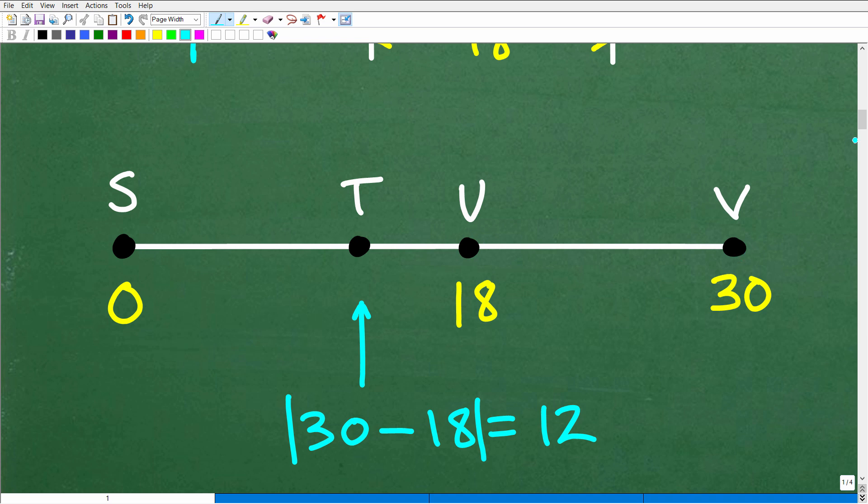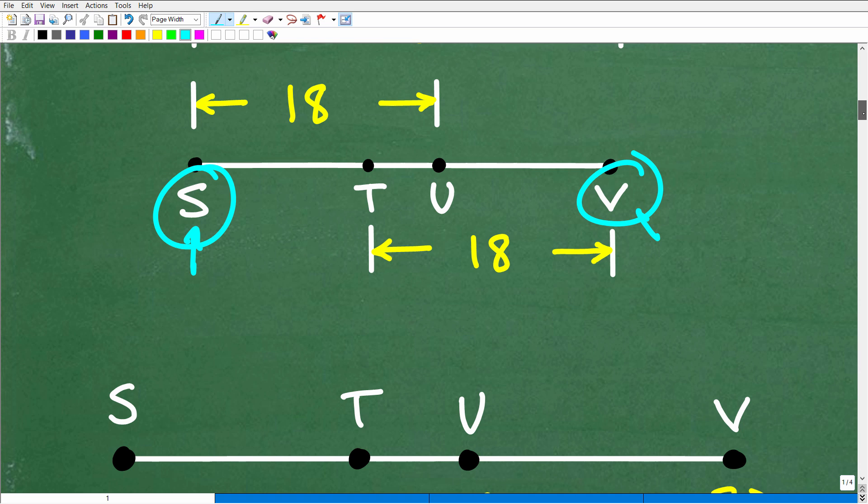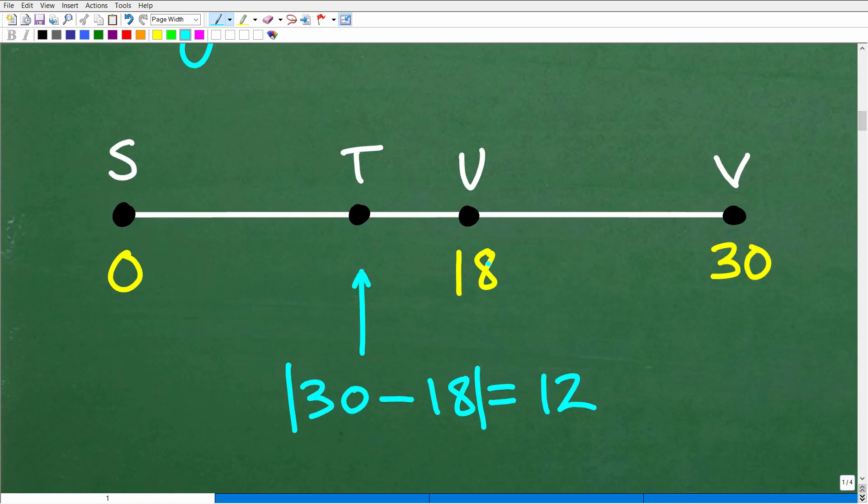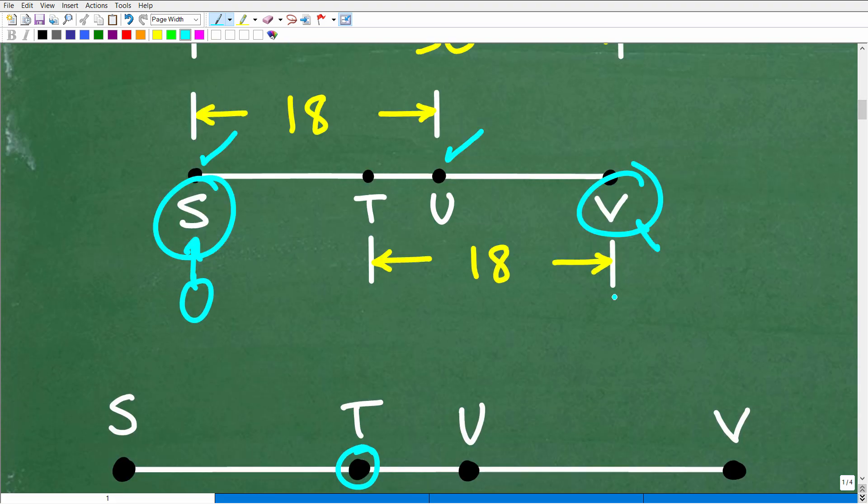Now, you can see I have U at 18. Now, why did I put that there? Well, because you can see from S to U, if this is zero and U is 18 units away from S, then its coordinate on a number line would be 18. So what we want to do is figure out the coordinate for T.